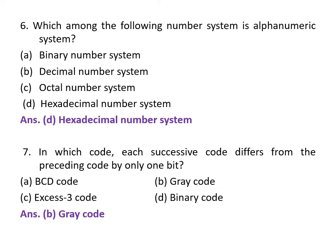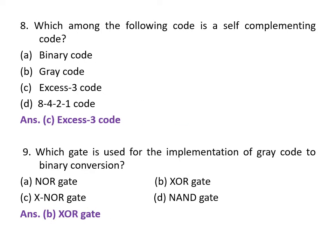8th question is: Which among the following code is a self-complementing code? A. Binary code, B. Gray code, C. Excess-3 code, D. 8421 code. And the correct answer is Excess-3 code. Excess-3 code is a self-complementing code.